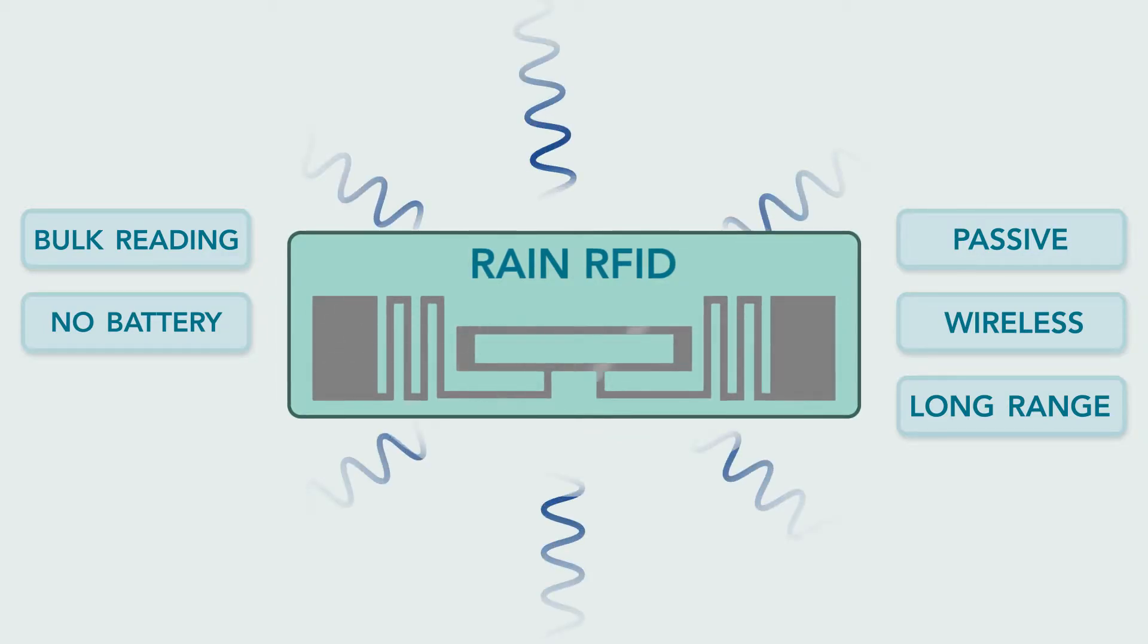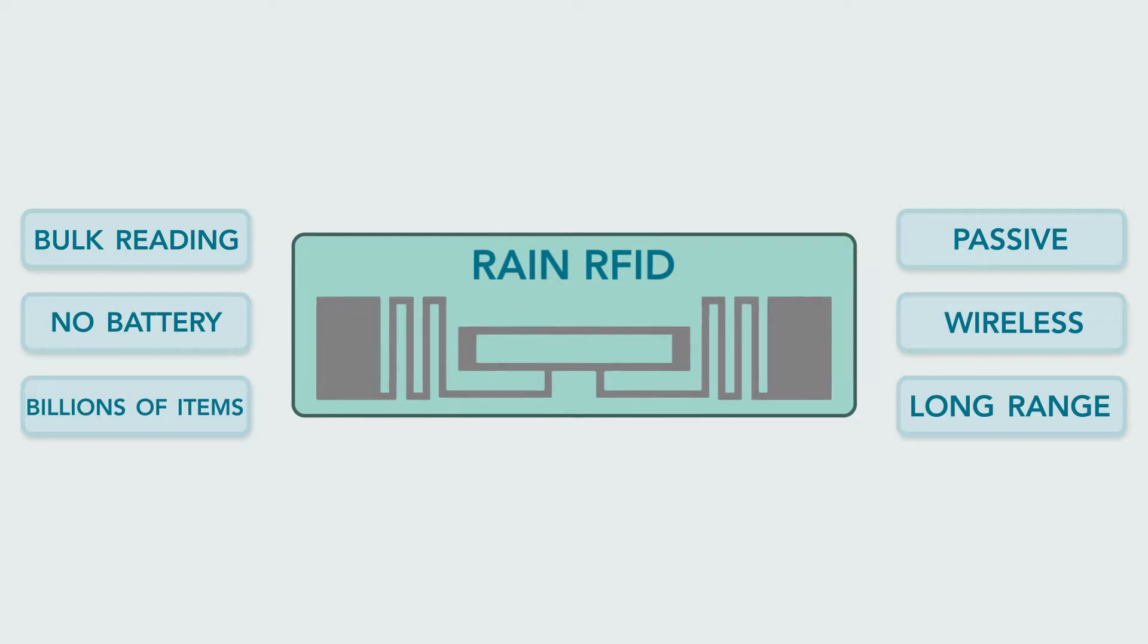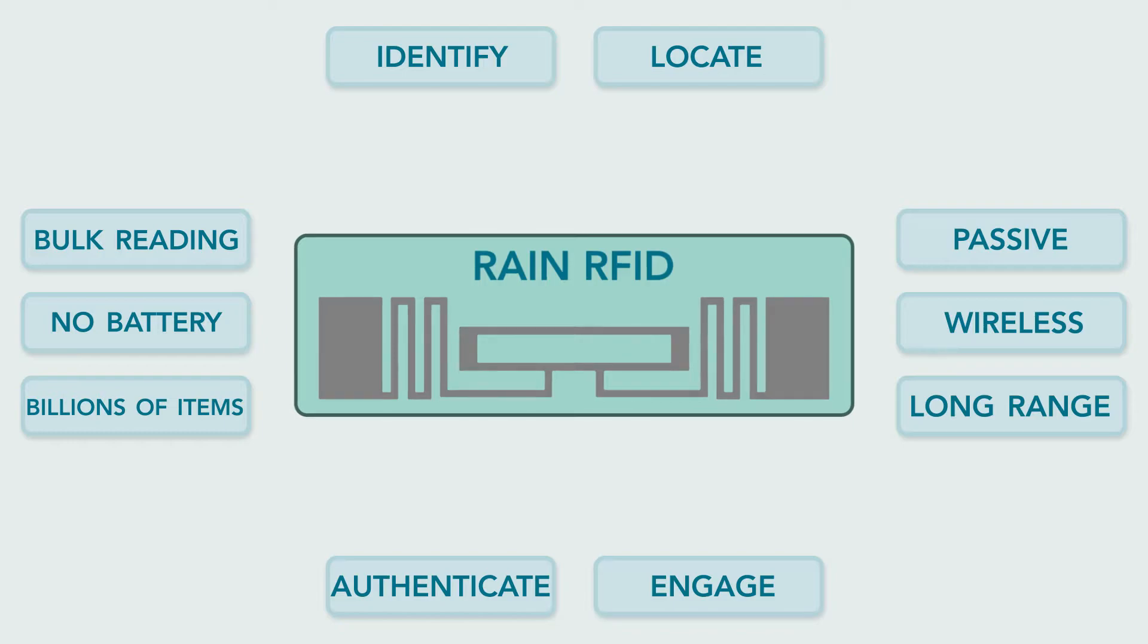Energy is harvested from the RF field. This technology already connects billions of items to the IoT and enables the capability to identify, locate, authenticate, and engage each of those items.